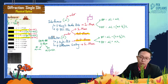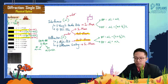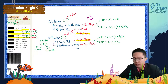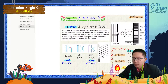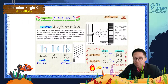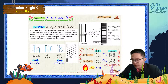Right now, we're going into diffraction, which has single slit and diffraction grating. So, double slit is under interference. For single slit, it's under diffraction.